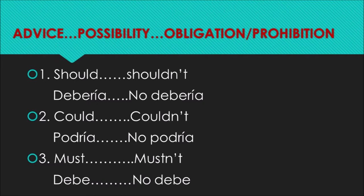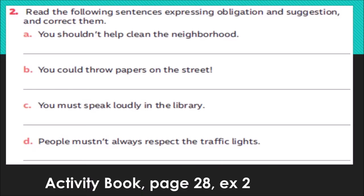Number three: must / mustn't — debe / no debe. Esta es una obligación. Usted debe hacer clases de inglés — es una obligación. Usted no debe ensuciar la vereda — esa es una prohibición. Entonces sería: should / shouldn't; could / couldn't; must / mustn't. La primera es la afirmativa y la segunda es la negativa. Very well, let's check the next activity. Vamos a ver la actividad y aquí vamos a aplicar lo que estábamos diciendo recién.